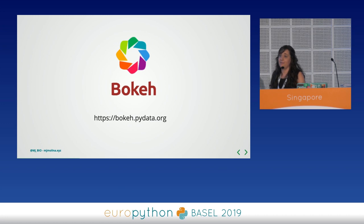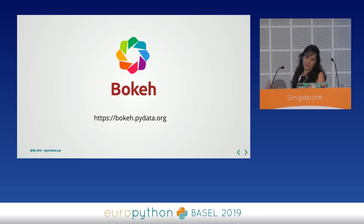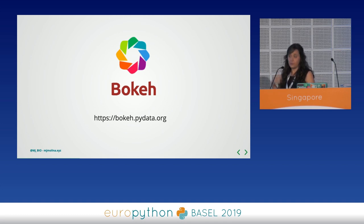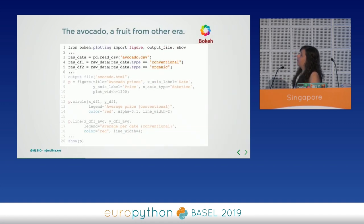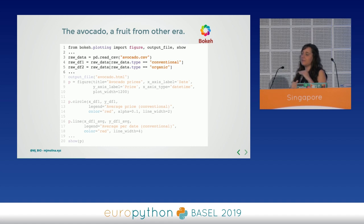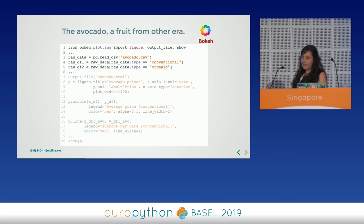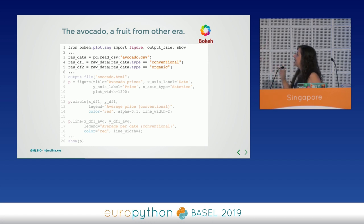I wanted to visualize the prices of avocados across a range of years using Bokeh. Bokeh is a model that allows us to produce interactive plots in a really easy way. Of course the script is a bit summarized — I summarized the scripts because there are a lot of examples — but all the information is available on my GitHub, which I will give you later.